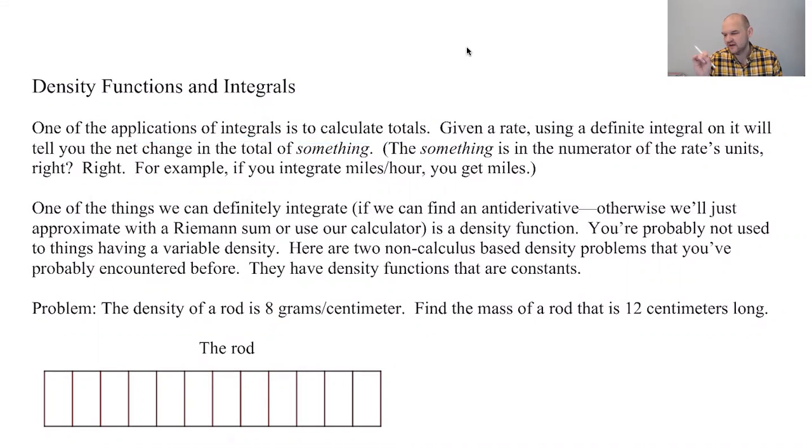Every rate is something per something, right? So given a rate, using a definite integral on it will tell you the net change in the total of something. The something is just the numerator of the rate's units.